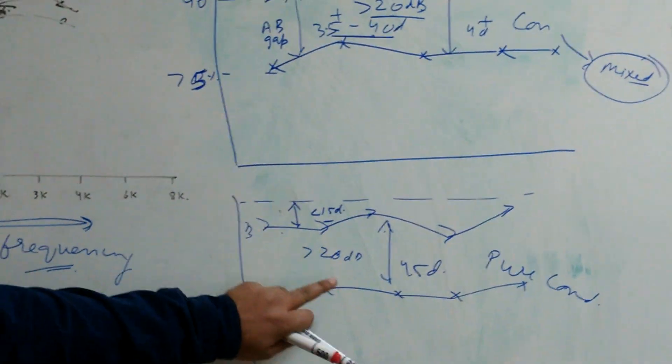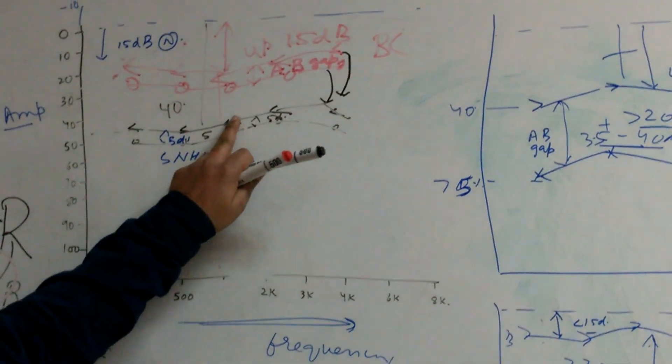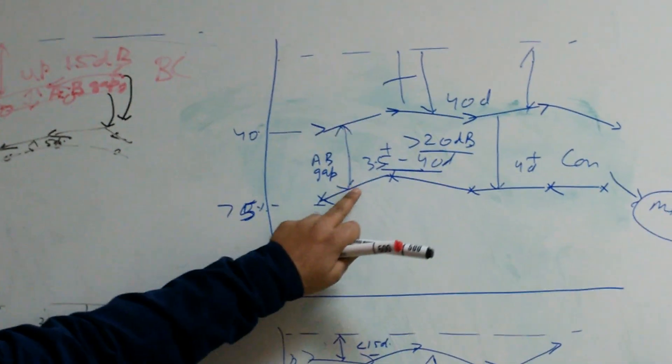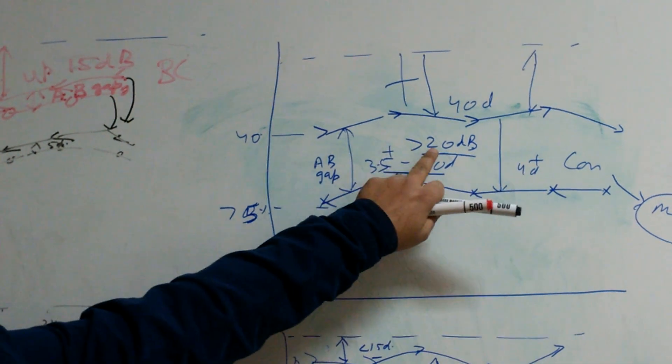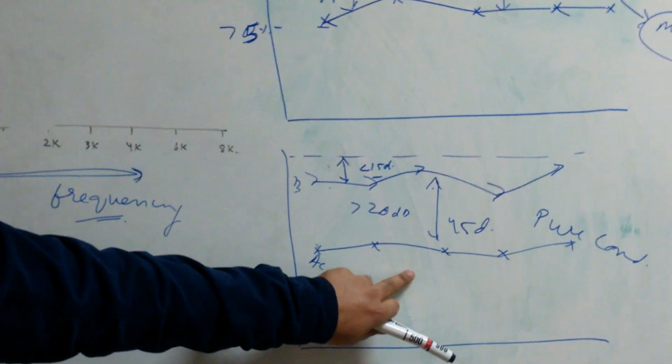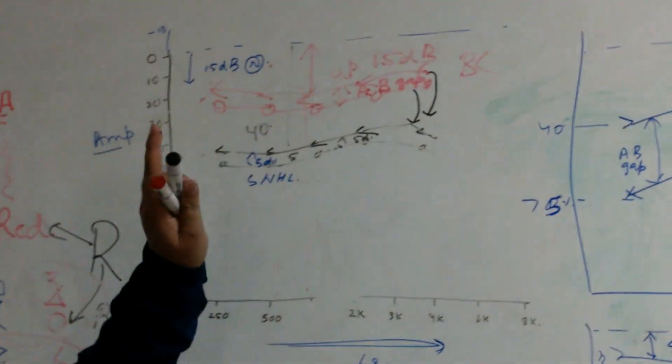Now you can see differences between these three graphs. Both have come down but difference is less than 15 decibels. Both have come down but AB gap is more than 20 decibels. Only air conduction has come down, AB gap is more than 20 decibels. So pure conductive, mixed, sensorineural hearing loss.